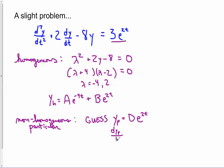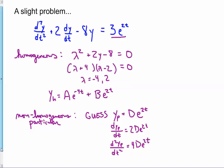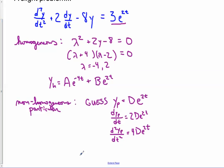So, first derivative, 2d e to the 2t. Second derivative, 4d e to the 2t. Plug it in. We get 4d e to the 2t, second derivative, plus 2 times the first derivative, so plus 4d e to the 2t, minus 8 times the guess itself, minus 8d e to the 2t. And this is supposed to equal 3e to the 2t.